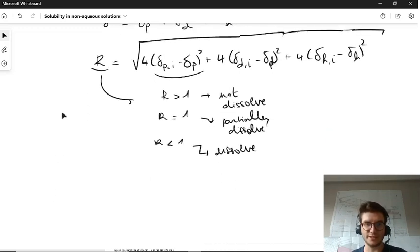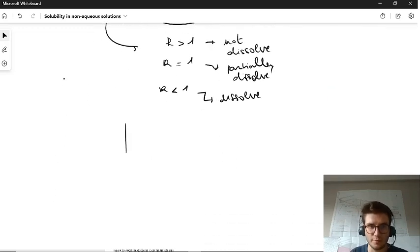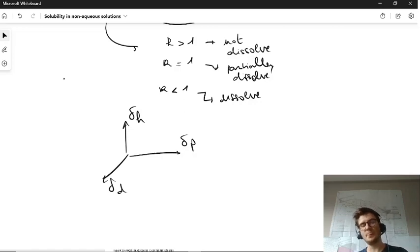Usually how this is represented in engineering is you want to visualize this in a 3D space where you put the three Hansen parameters, the polar one, the hydrogen one, and the dispersion one, in a 3D system and you partially check the value of your solute.